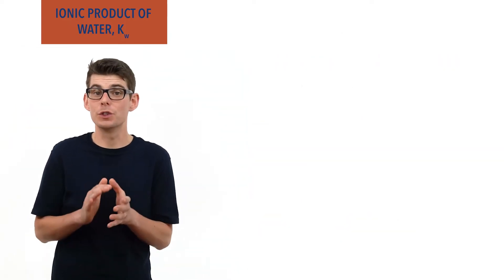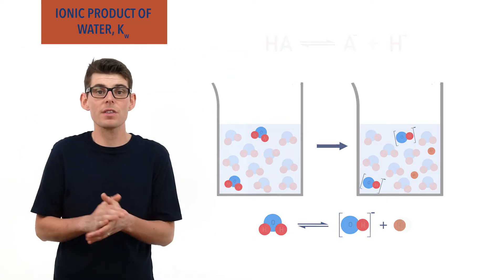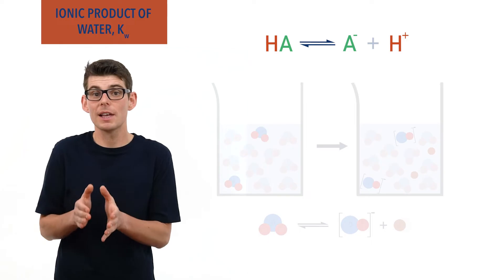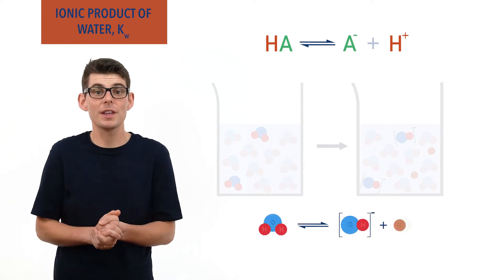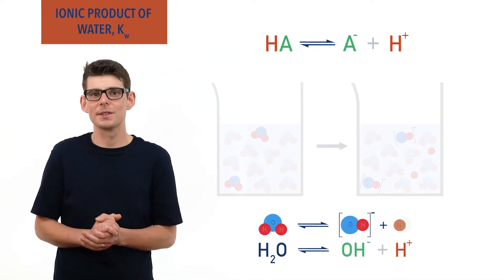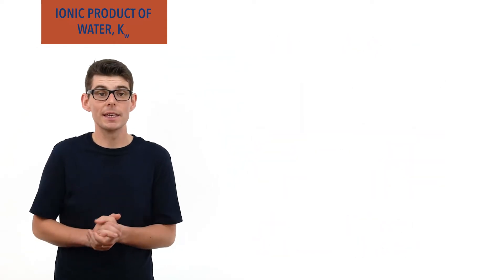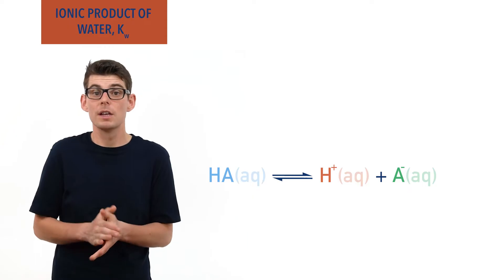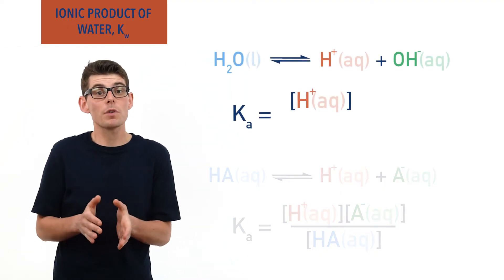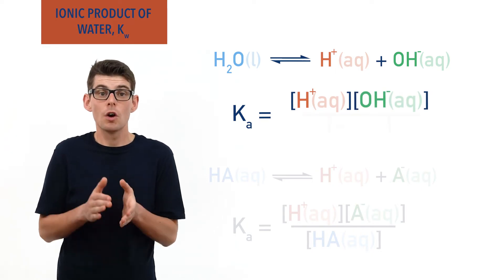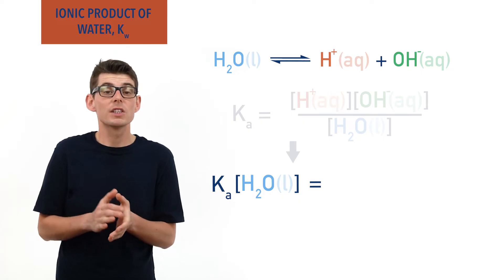Because some molecules do dissociate, we can think of water as a weak acid. A weak acid dissociating gives the reversible reaction and equilibrium: HA to H plus and A minus. This looks similar to the dissociation of water: H2O to H plus ions and OH minus ions. If we treat water as a weak acid, we can write an expression to find its acid dissociation constant Ka. Ka equals concentration of H plus times concentration of OH minus divided by concentration of H2O. We can rearrange this to give: Ka times concentration of H2O equals concentration of H plus times concentration of OH minus.